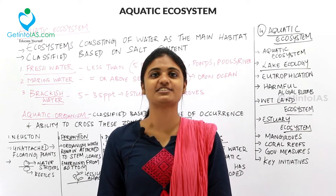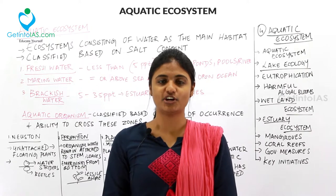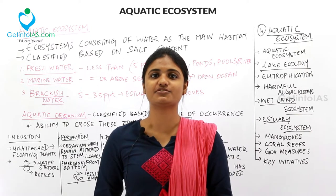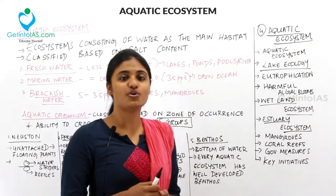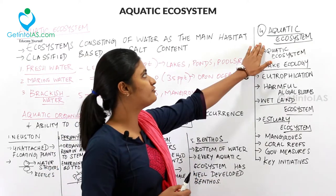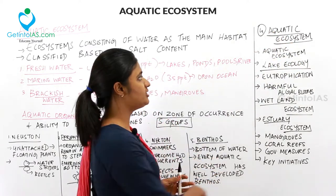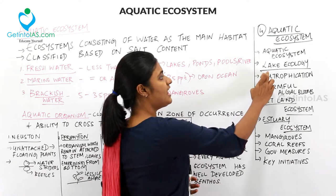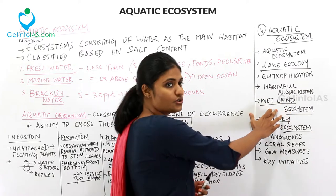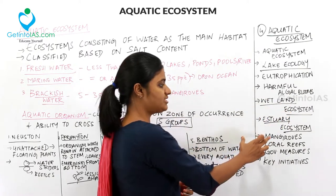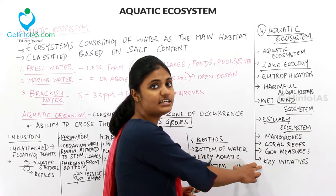Hello friends, welcome to Get Into IAS. This series on environment and ecology is presented by Shifna. In the last video we dealt with chapter 3. In this video we are going to deal with chapter 4, aquatic ecosystem — covering lake ecology, eutrophication, harmful algal blooms, wetland ecosystem, estuary ecosystem, mangroves, coral reefs, government measures, and key initiatives.